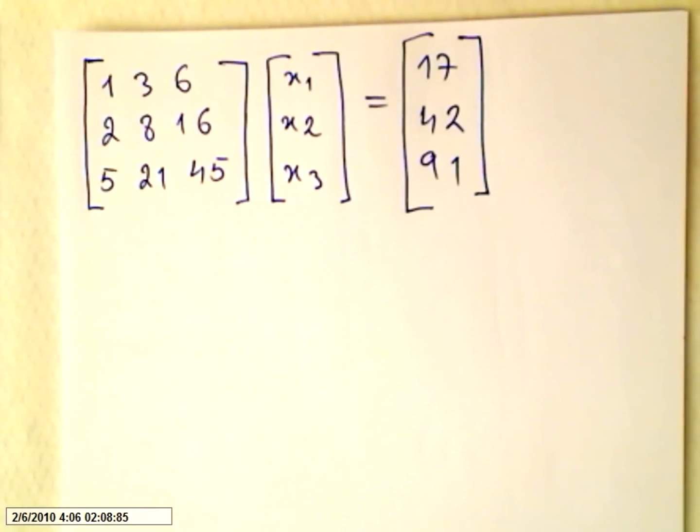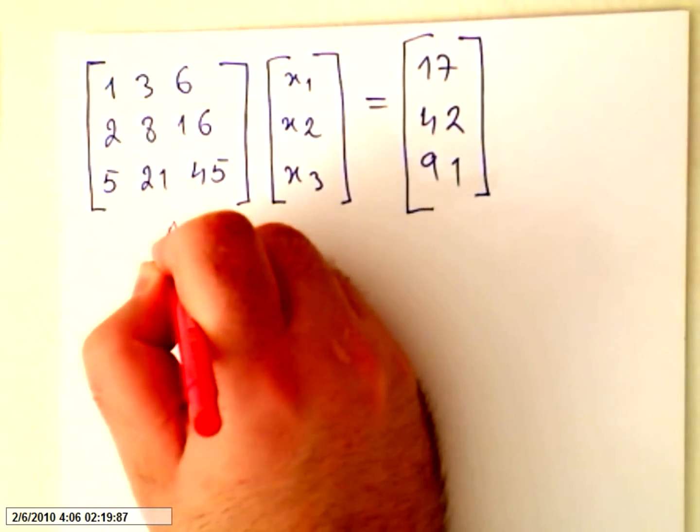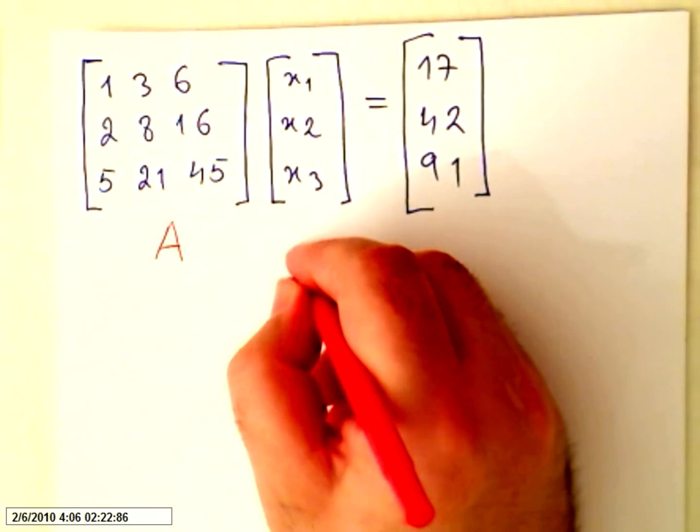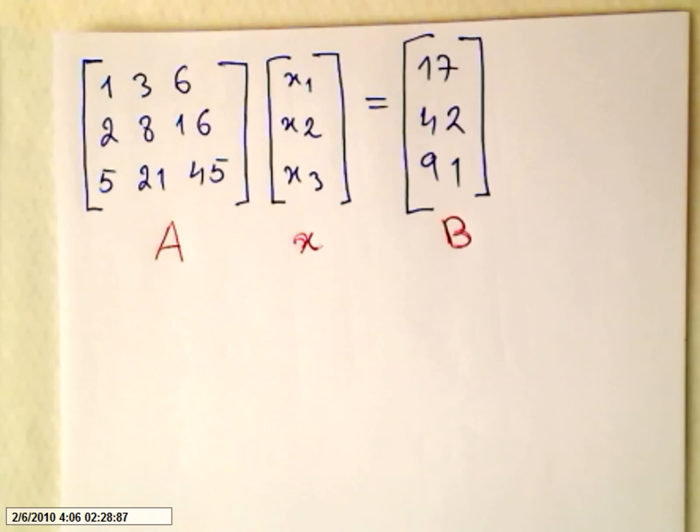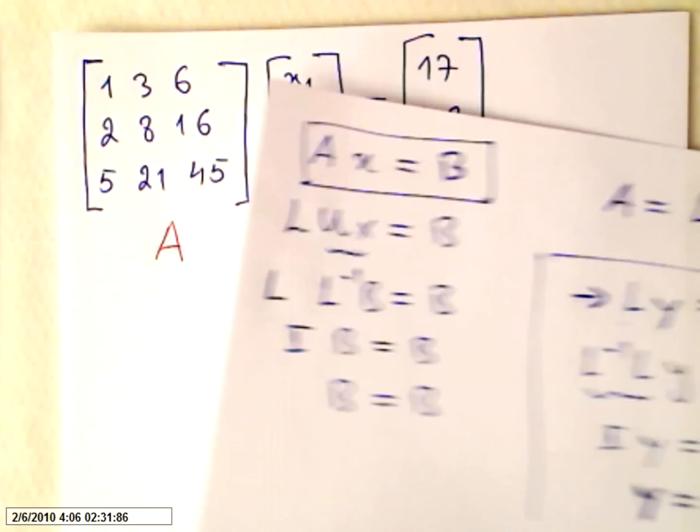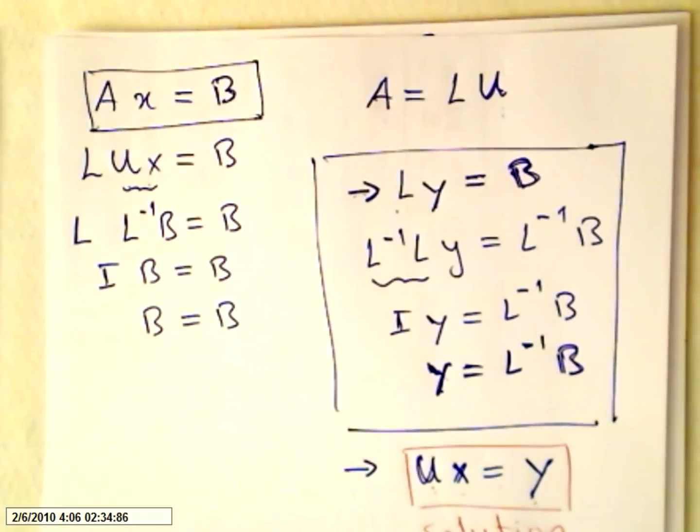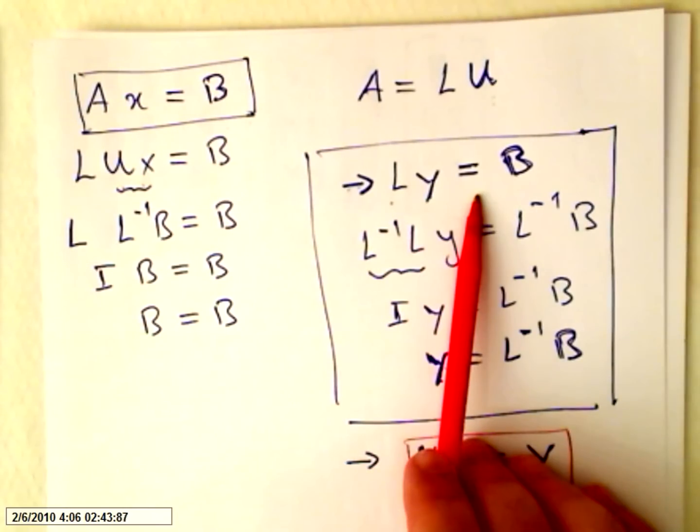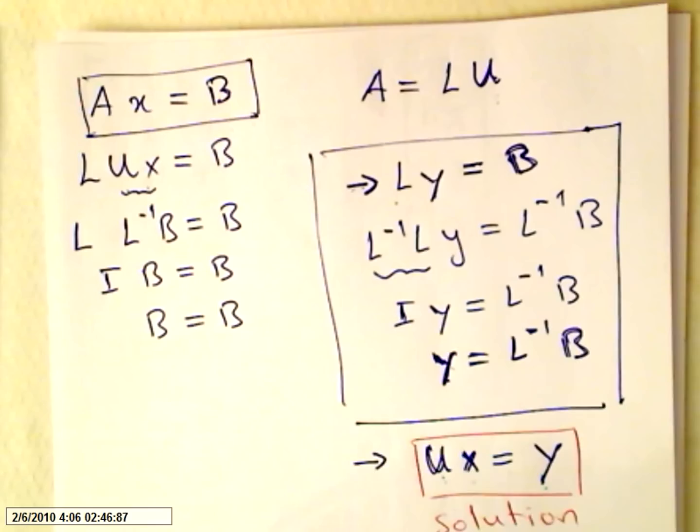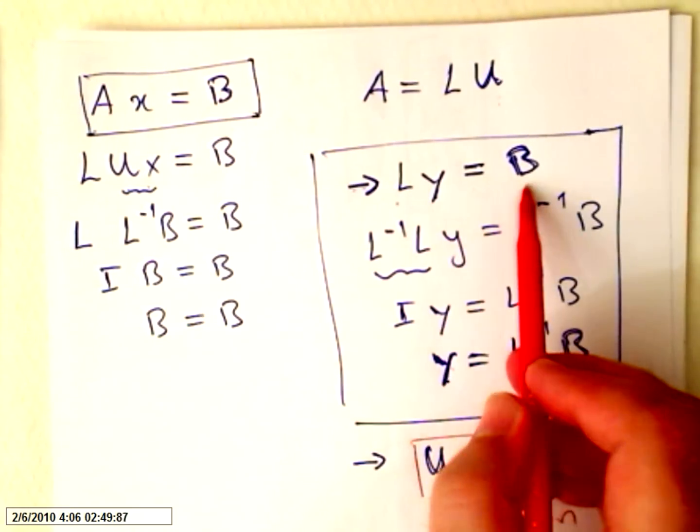So this matrix is A, this is x, and this is B. What we got here so far is this Ax equals B. Now we have to move into this step, Ly equals B, so lower times new variables equals B.